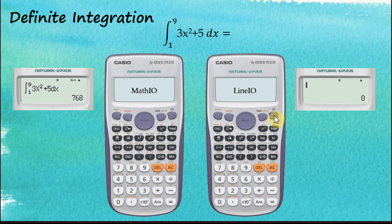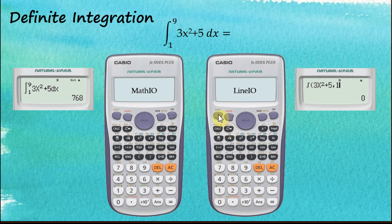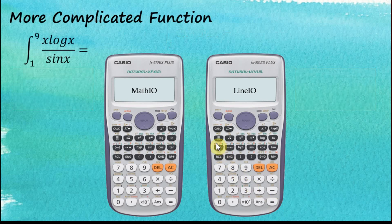For Linear Input/Output it's more or less the same. We start with the integration button, then enter the function: 3x² + 5. After that, we use comma to separate the parameter from the function. We enter the lower limit one, then shift-comma, then nine, and close the brackets. This is the answer.